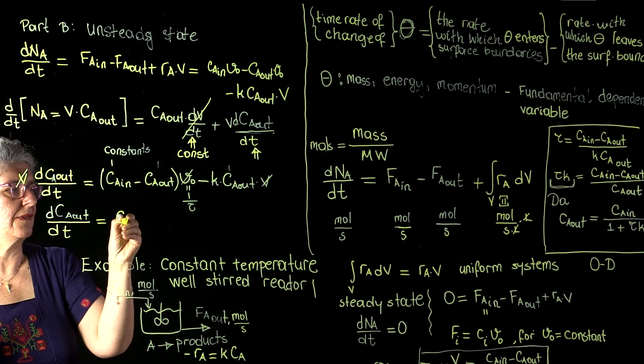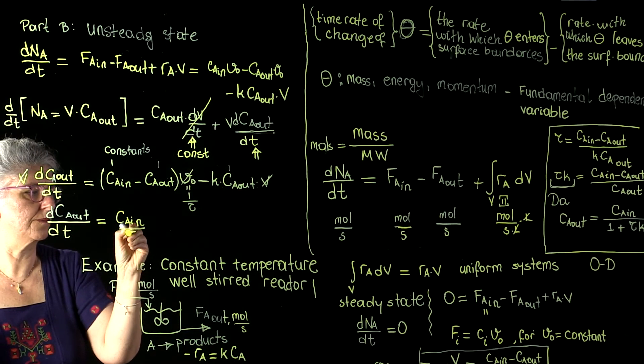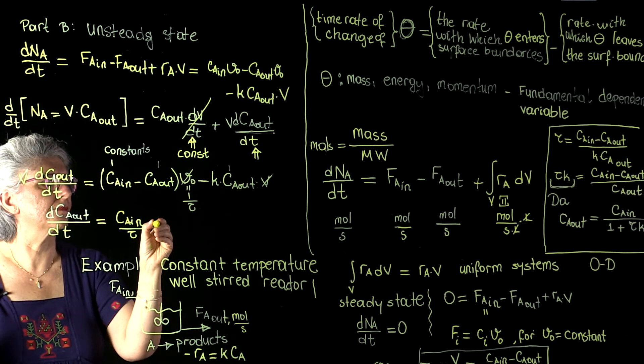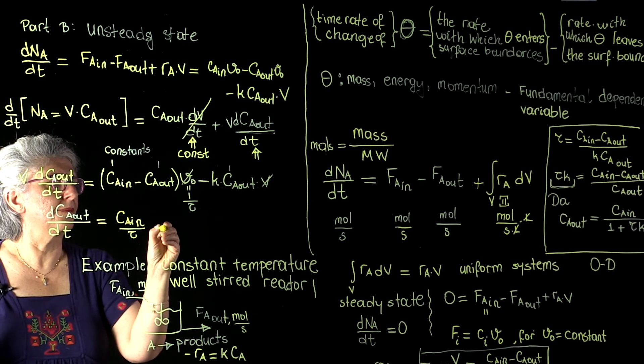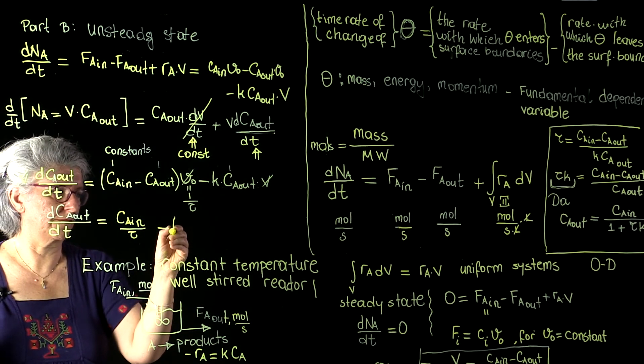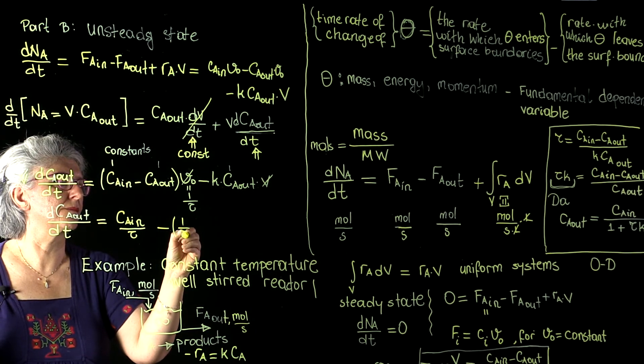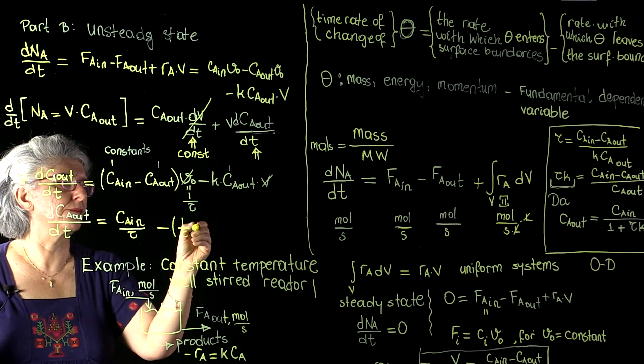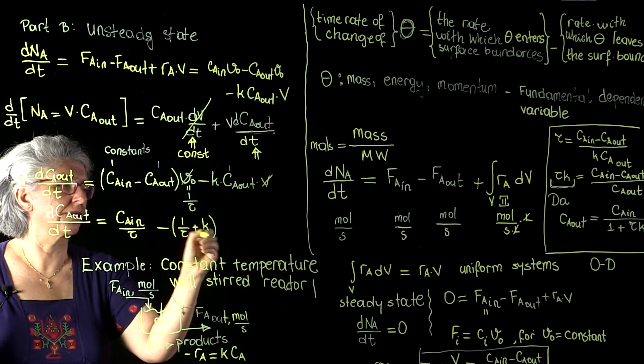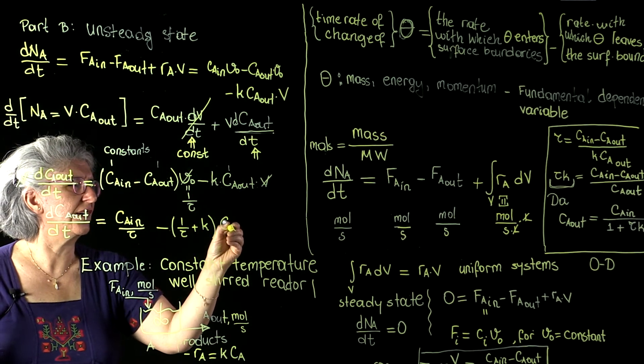CA in over tau minus, minus 1 over tau plus K, times CA out.